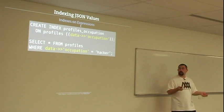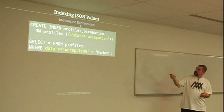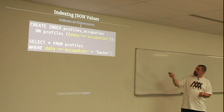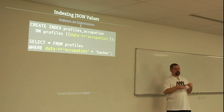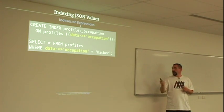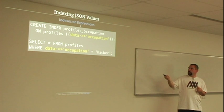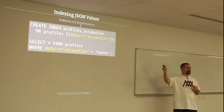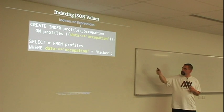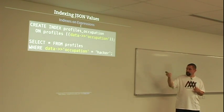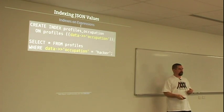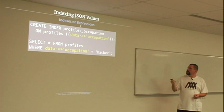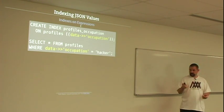With expression indexes, you define the index not just on a column but on the result of an expression. So when building the index, it stores the result of that expression. If you use the same expression when selecting, Postgres uses that index. So you can index deep into a JSON field — for example, on login time — and it's actually quite fast.